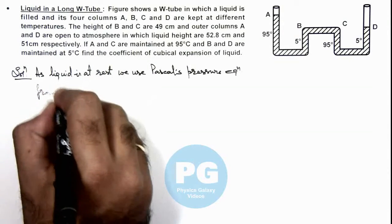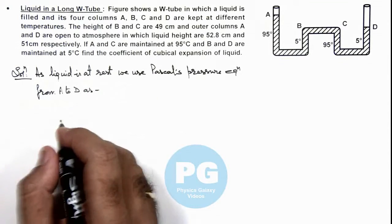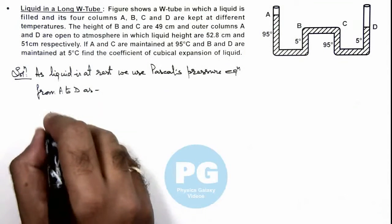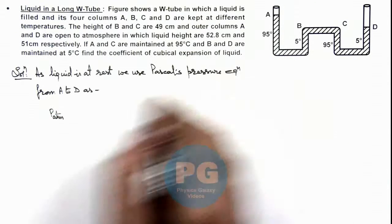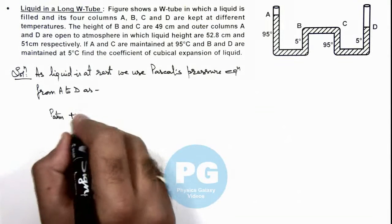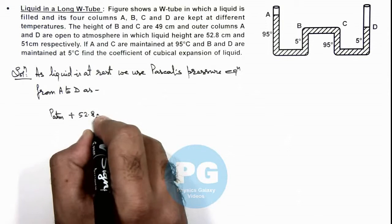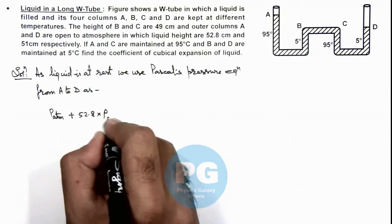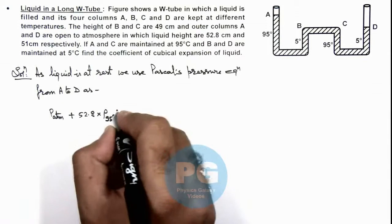From A to D, as in this equation, here we can write at point A pressure is P atmosphere. At the bottom of A pressure can be written as its height is 52.8 multiplied by density of liquid at 95 degree multiplied by g.